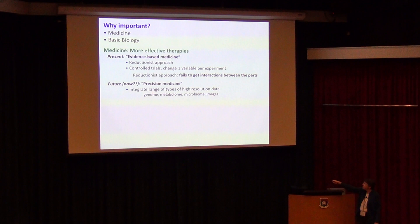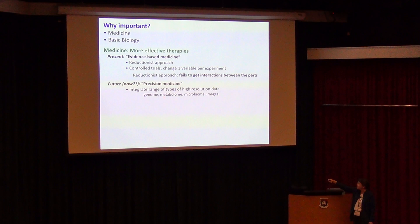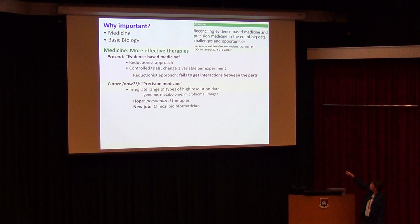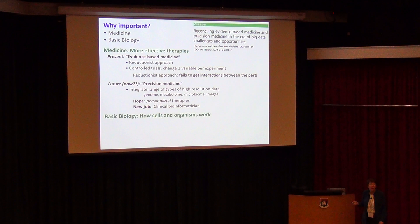Precision medicine integrates a range of different types of high-resolution data — for example, the individual genome sequence, the metabolome (the different metabolites and chemicals in the body), the different microbes in the body, and various images — to try to get a more precise idea of what's going on. The hope is personalized therapies, and this is giving rise to a new job: the clinical bioinformatician. For me personally, I'm more focused on basic biology — how cells and organisms really work.